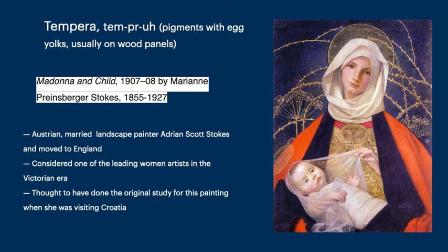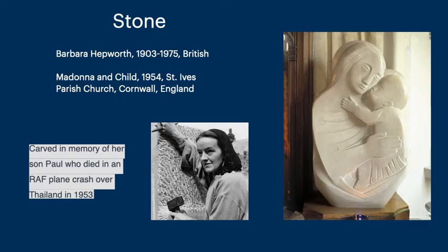Next we have a very intriguing work — Madonna and Child by Marianne Stokes, who was from Austria and married an Englishman and moved to England. This is in tempera. She was considered one of the leading female artists in the Victorian era, and it is thought she was inspired by some of the people she saw when visiting Croatia. Next we have a stone figure by Barbara Hepworth, the famous sculptress — Madonna and Child in St. Ives Parish Church in Cornwall, England. This was carved in memory of her son Paul, who died in an RAF plane crash over Thailand in 1953.